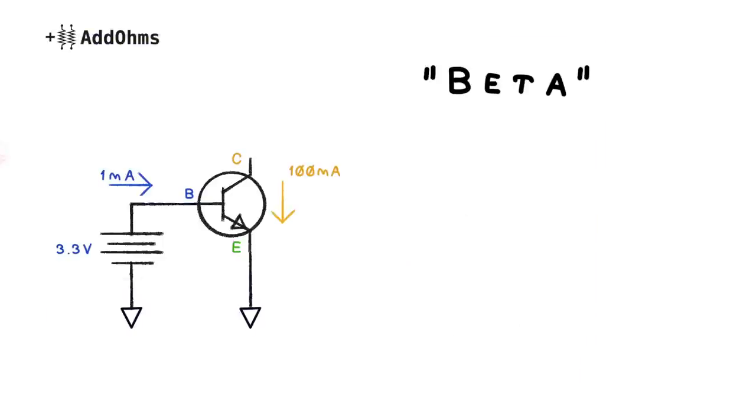Using a simple formula, we can estimate the maximum current the transistor will allow through its collector to the emitter. The collector current is going to be equal to the base current times the beta of the transistor.